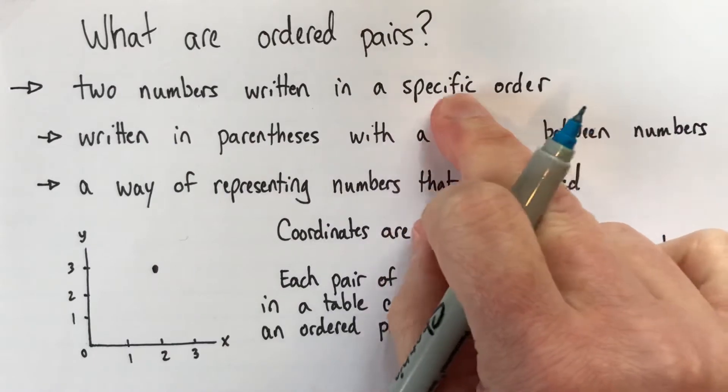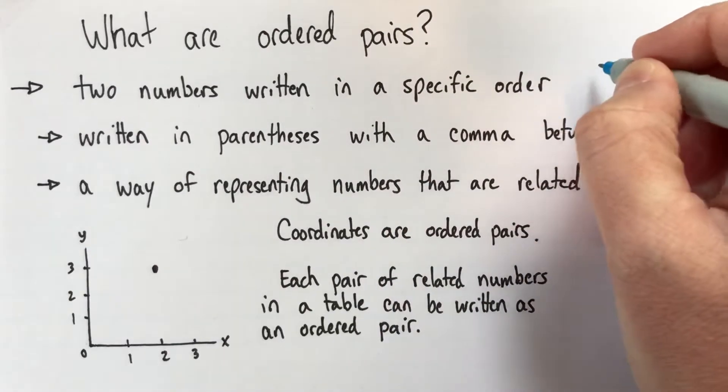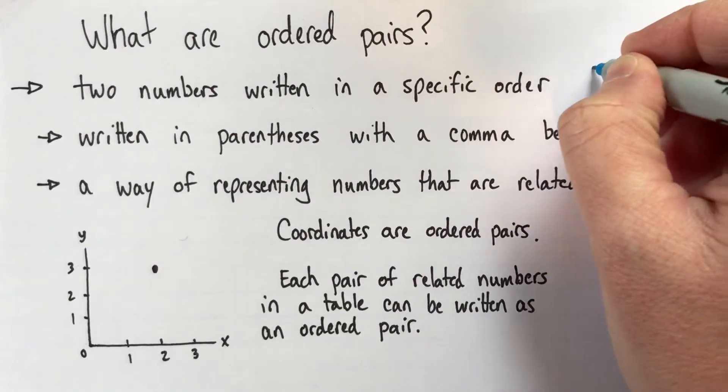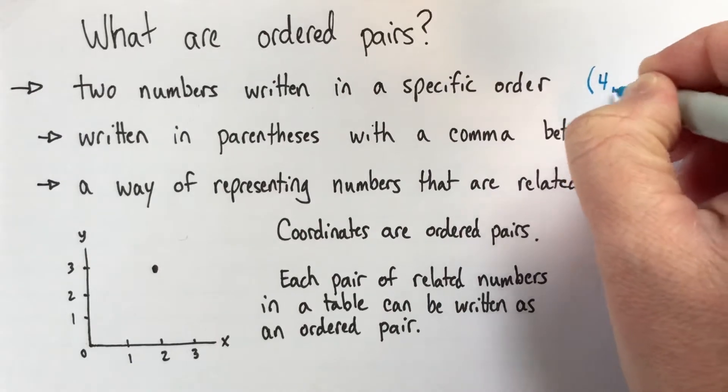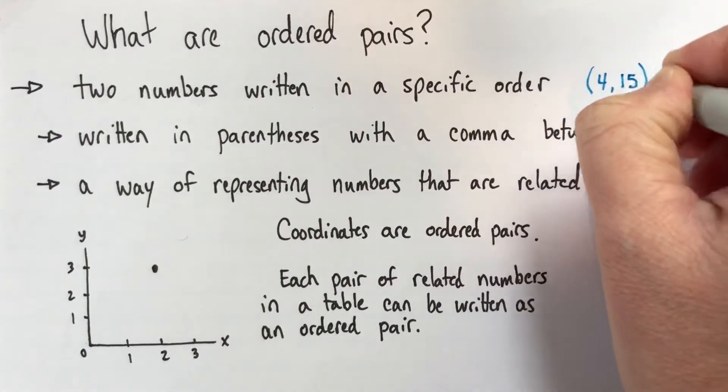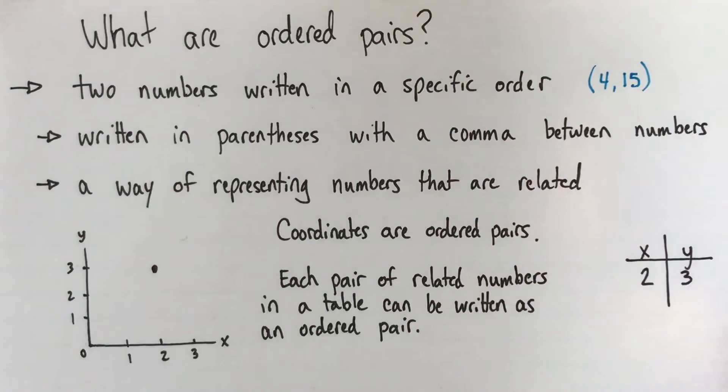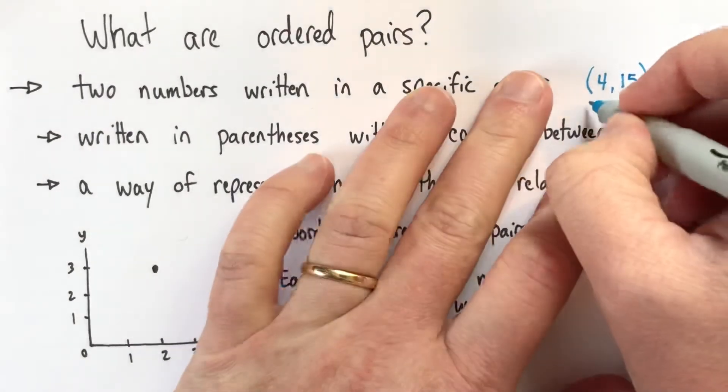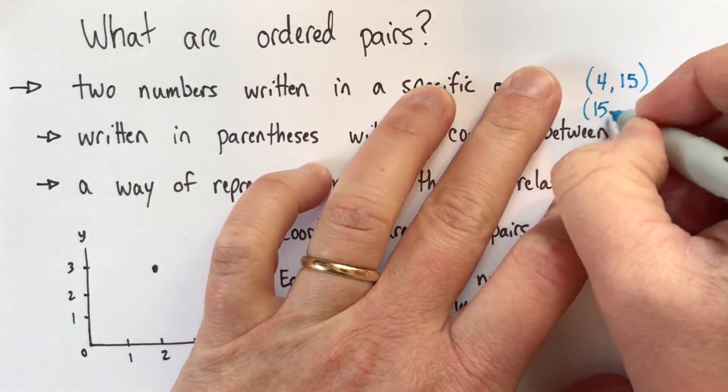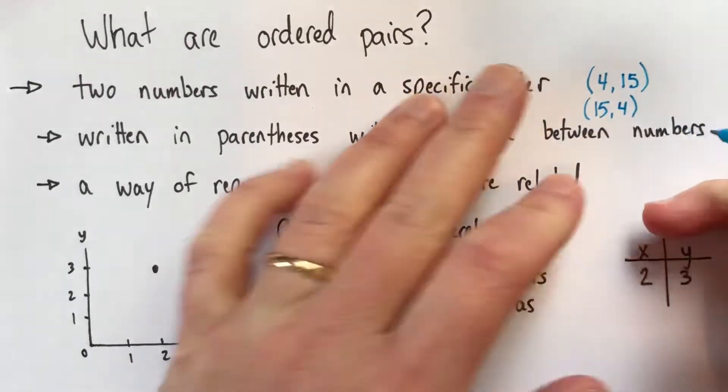So here, I just want to be clear about this specific order. I'm going to give you two examples here of two different ordered pairs. One of them is the pair 4, 15, and another one is the pair 15, 4.